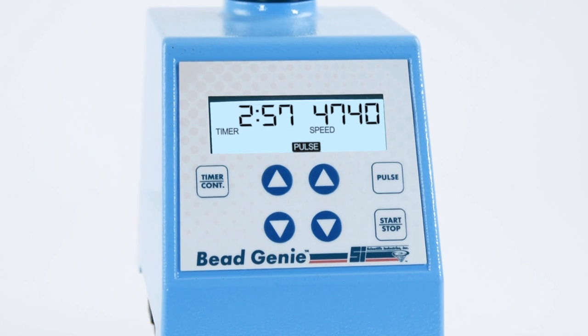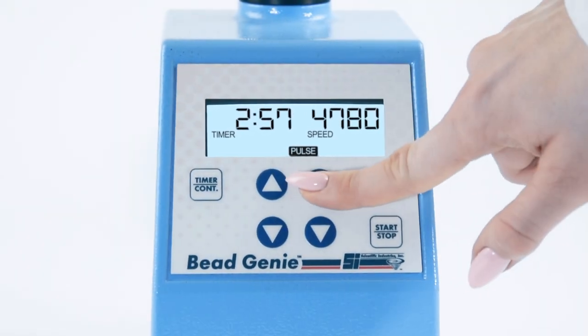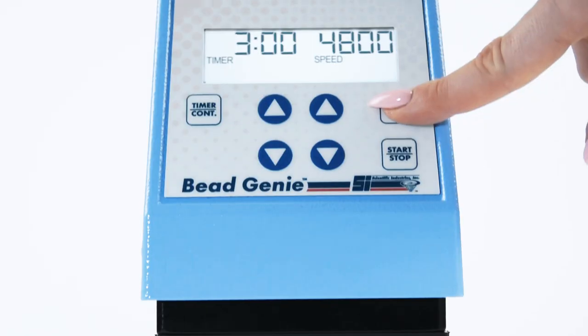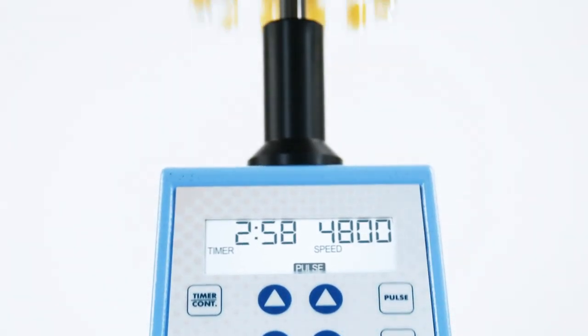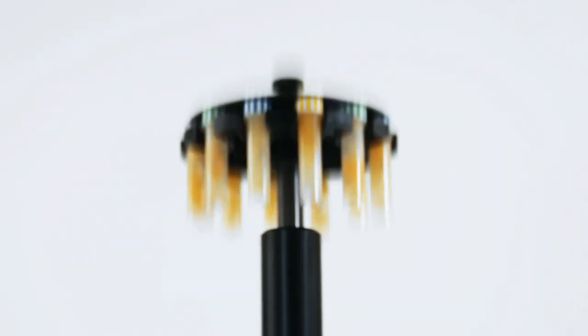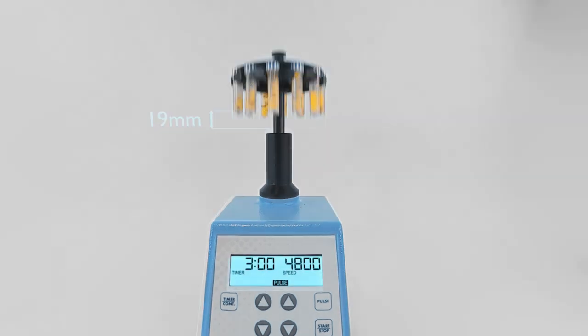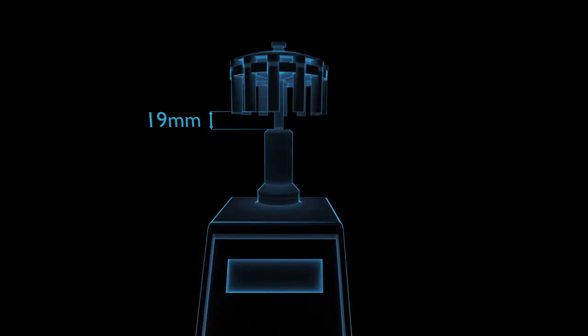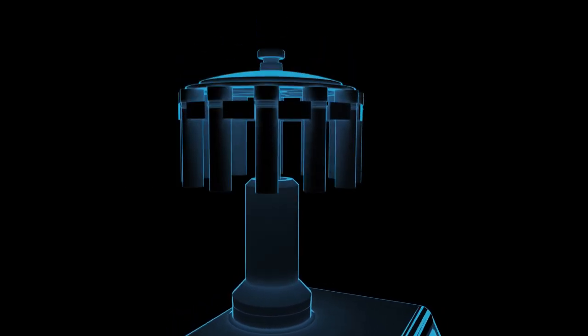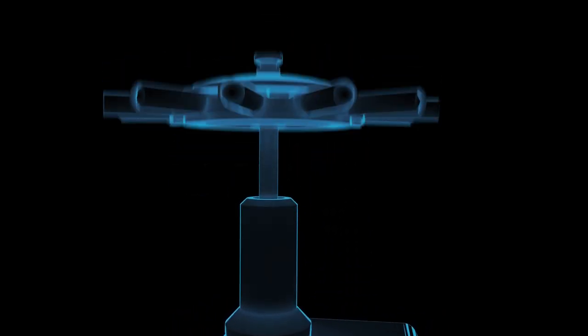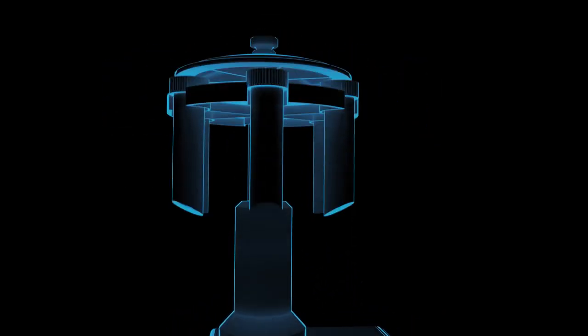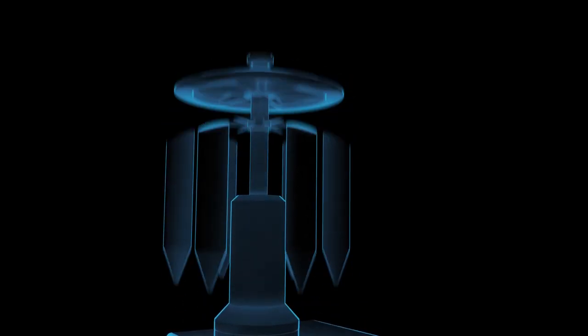The Bead Genie is no ordinary bead beater. It's fully configurable with speed, time, and on-off pulsing for consistent results and repetitive protocols. With a vertical 19-millimeter orbit, 4,800 strokes per minute, and the ability to interchange holders for different sized tubes, the Bead Genie is the most adaptable and economical bead beater in the market.